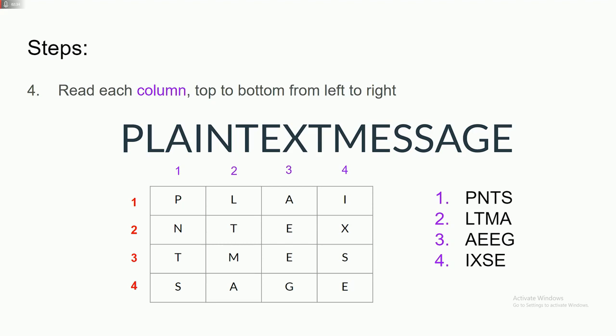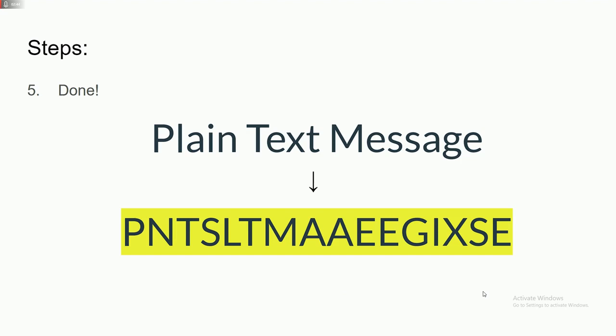Then you read each column, top to bottom, from left to right. So it'd be PNTS, LTMA, AEG, so on and so forth. And then we're going to put all of that together. So they become PNTS, LTMA, AEG, you get the idea. It becomes this encrypted thing.